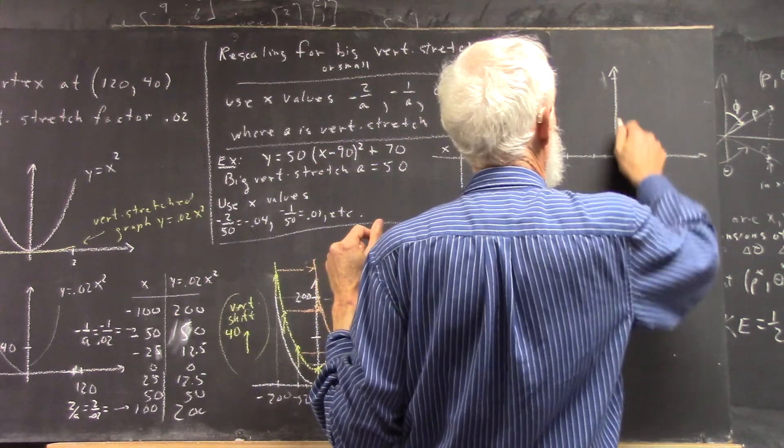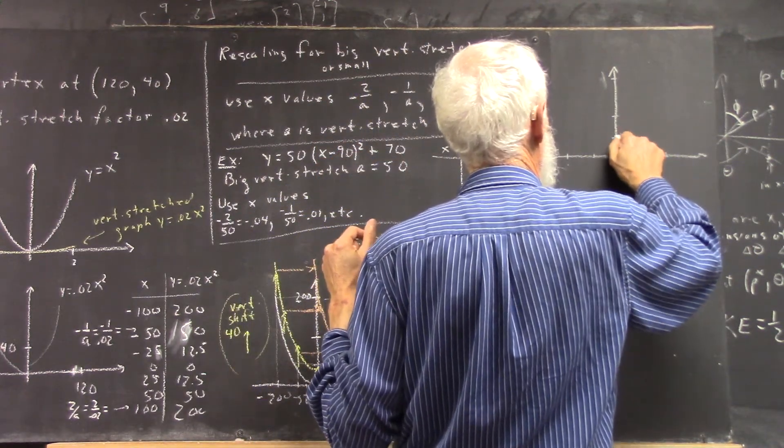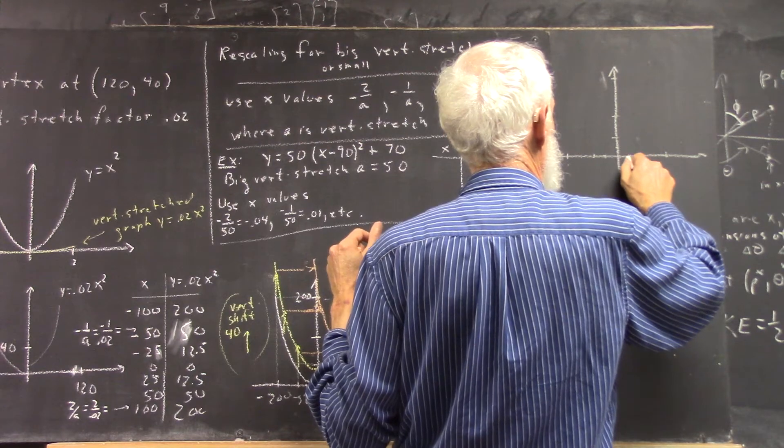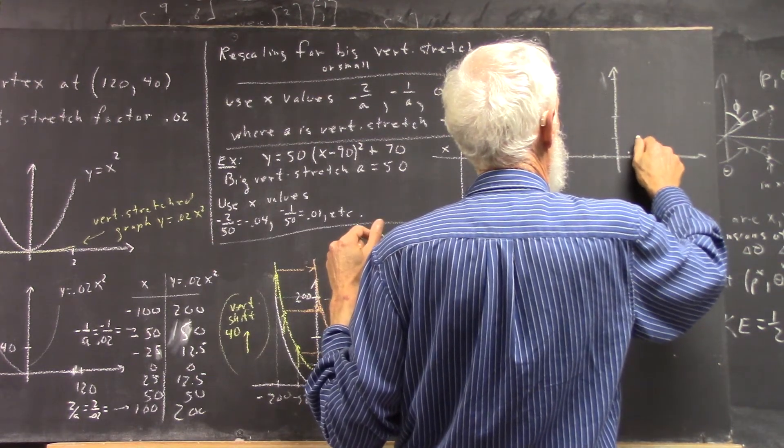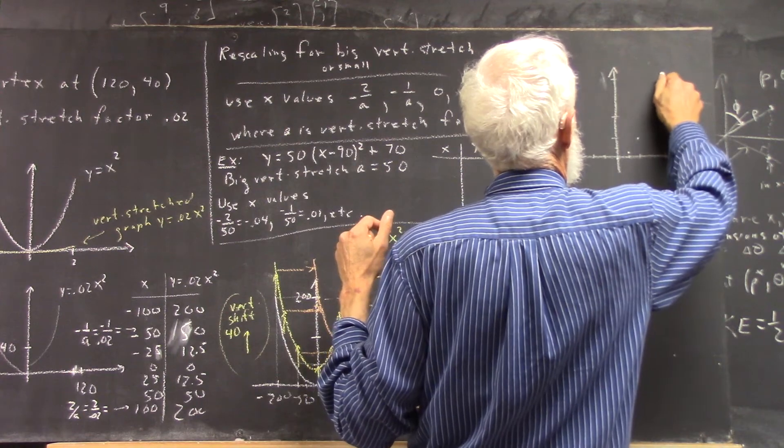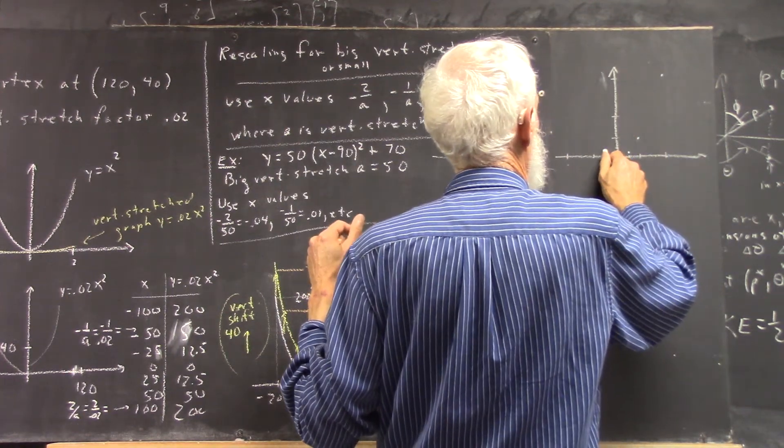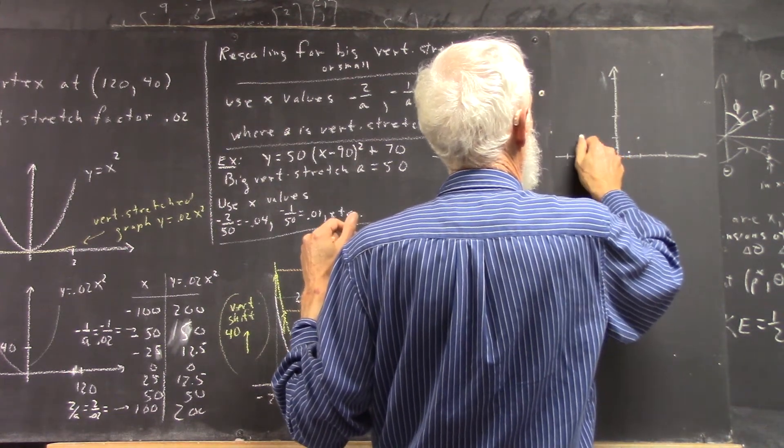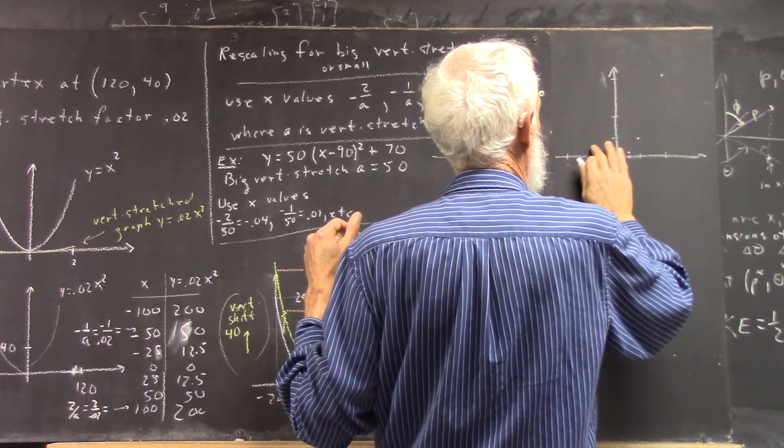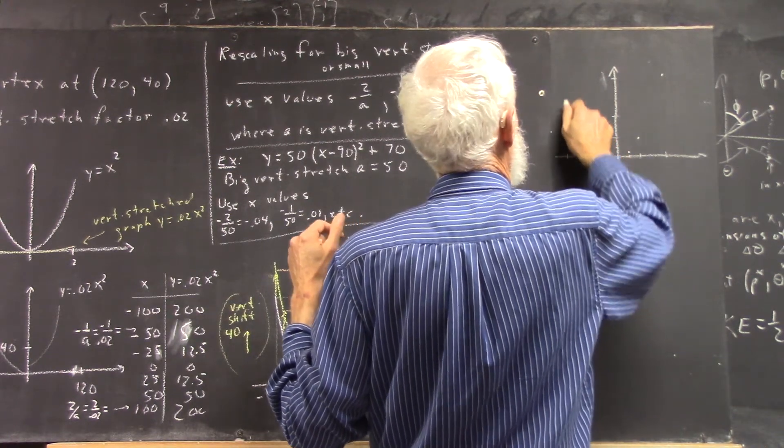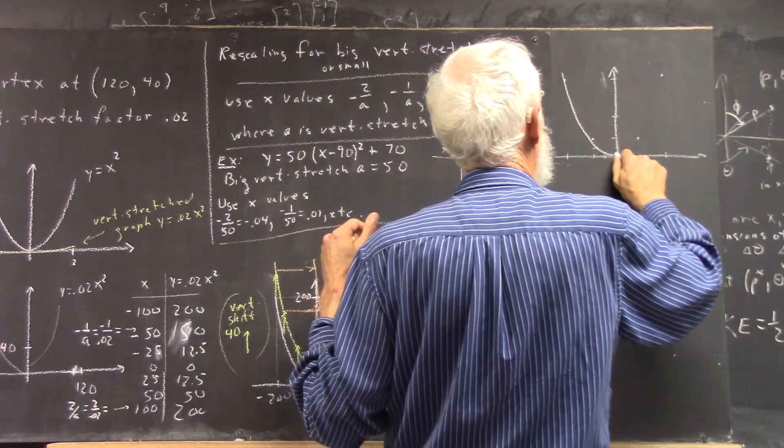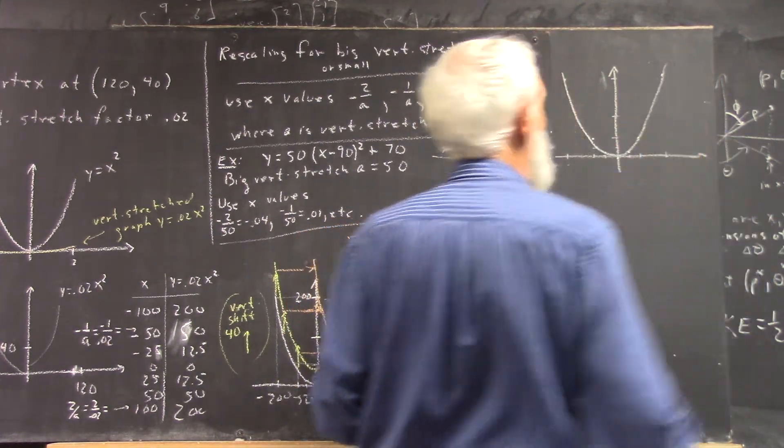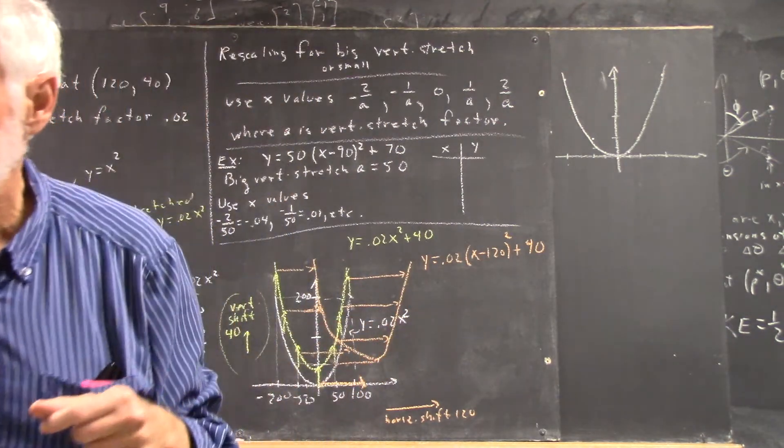Then we plot our points. There's 4, there would be 2, there would be 1, there would be 1 half, there would be 1 fourth. So we have points here, here, here, and here, and here, here, and here. So here is our graph.